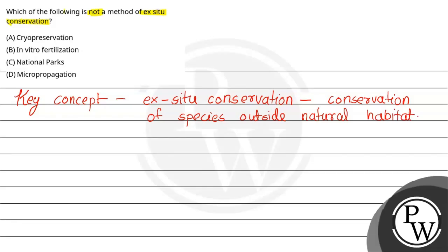So here, Cryopreservation, National Park, and Micropropagation — these are all Ex-situ conservation methods. They all involve taking organisms out of their natural habitat and preserving them in a safe place, especially for threatened or endangered species.